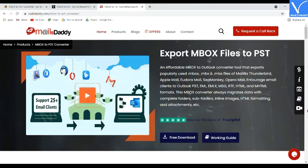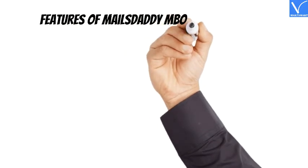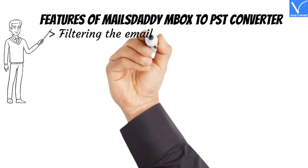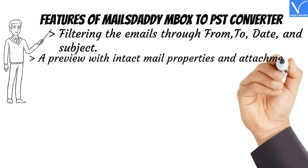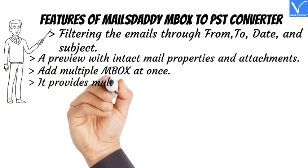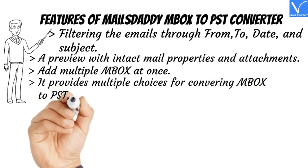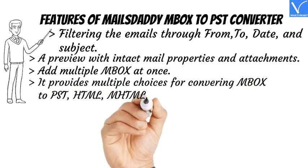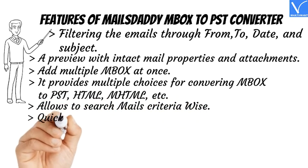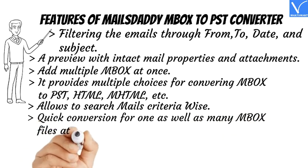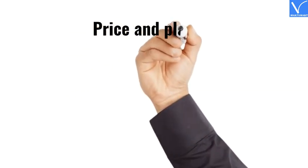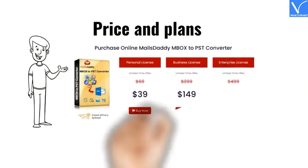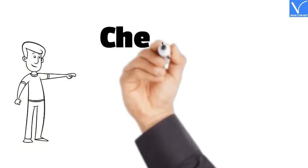Supported OS: Windows 10, 8, 7, Vista, and XP. Features: Filter emails by from, to, date, and subject. Preview with intact mail properties and attachments. Add multiple MBOX files at once. Provides multiple output choices including PST, HTML, MHTML, etc. Search mails by criteria. Quick conversion for one or many MBOX files at a time. Save mail formats by right-clicking on selected emails. Check the description for the product link.